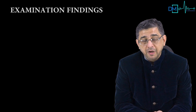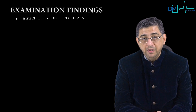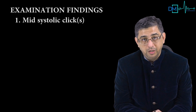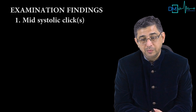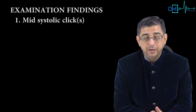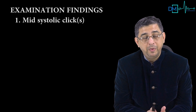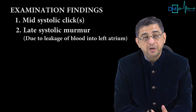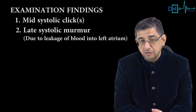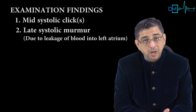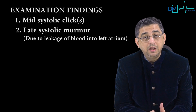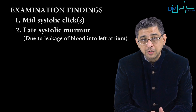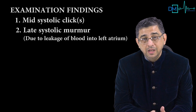Examination findings in mitral valve prolapse: first, mid-systolic click or clicks — multiple chordae tendineae get stretched like rubber bands one after another. Second, because of defective coaptation of the valve leaflets there can be blood leakage, resulting in a murmur called a late systolic murmur.